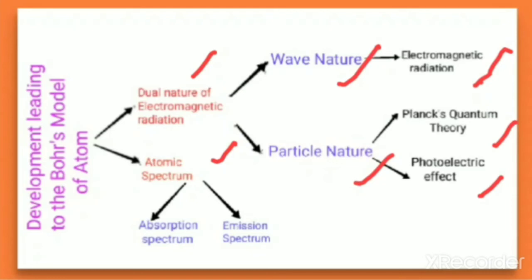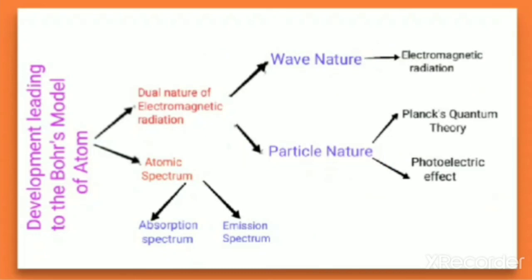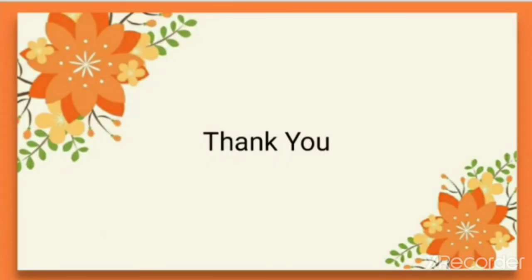For atomic spectrum, we will discuss two types: absorption spectrum and emission spectrum. Before discussing the Bohr model, we will cover these points separately in separate videos. In upcoming videos, we will be discussing electromagnetic radiation, Planck's quantum theory, photoelectric effect, and atomic spectrum in detail. Thank you everyone.